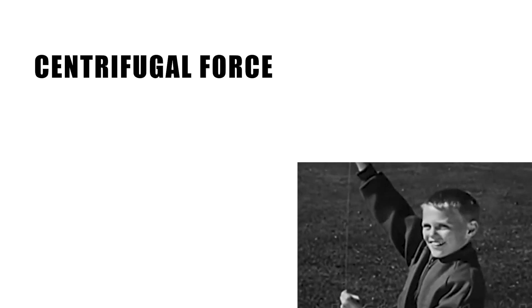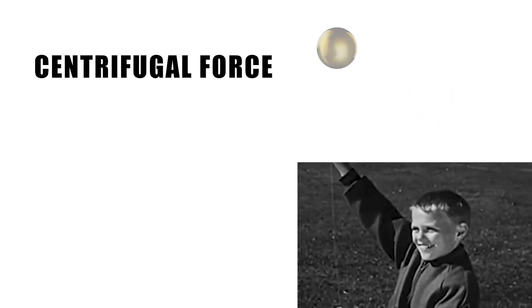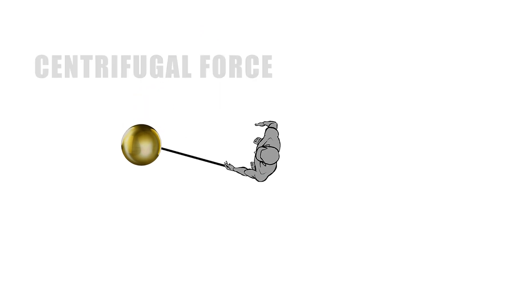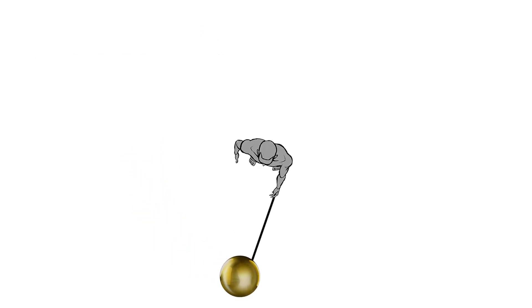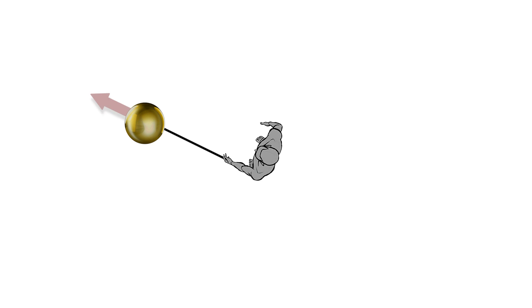If you attach a ball to a string and then swing it over your head in a circle, it will keep spinning around. Because of the ball's circular motion, there's an outward centrifugal force that keeps the string taut.